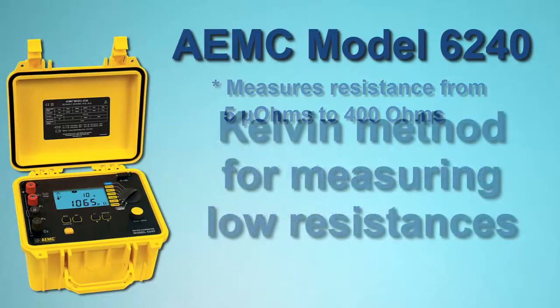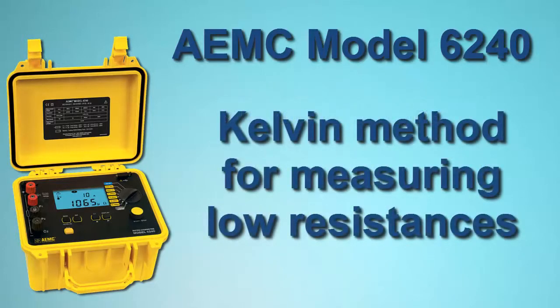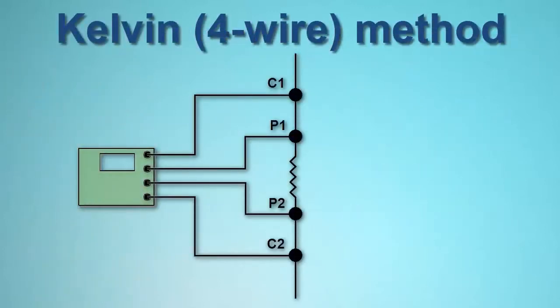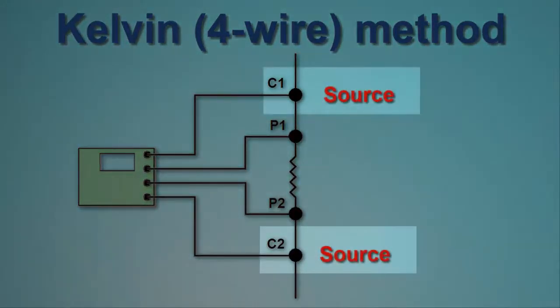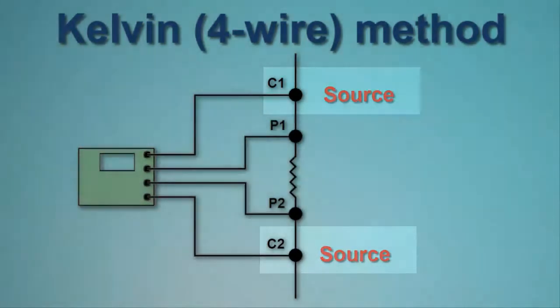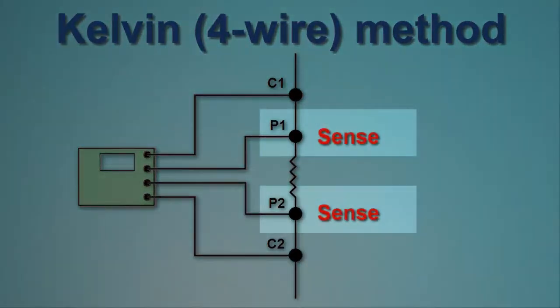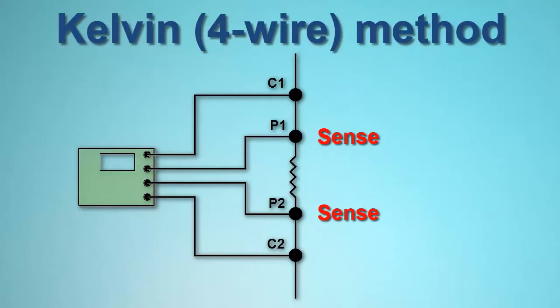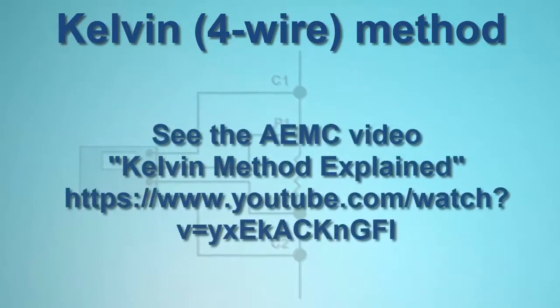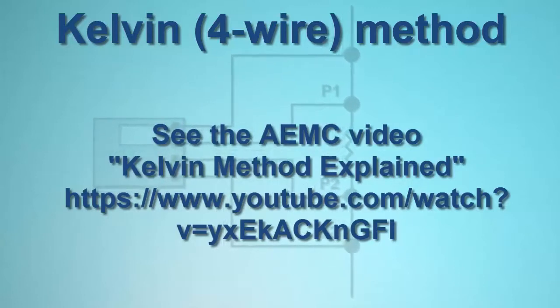The Model 6240 employs the Kelvin testing method to measure very low resistances to within a quarter of a percent accuracy. Kelvin testing uses two separate pairs of leads. One pair, called the source leads, provide a known quantity of constant current. The second pair, called the sense leads, measures voltage. There is virtually no current flowing through the sense leads. Nearly all the current flows through the source leads. This allows for a high level of measurement sensitivity and accuracy when the load under test is of low resistance.